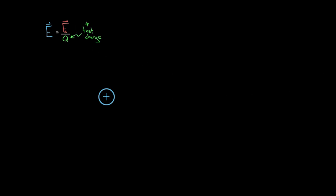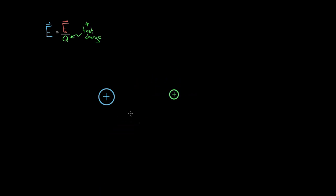If you take some positive test charge into some region and move it around, all you have to do to figure out the direction of the electric field — since this Q would be positive — is figure out what direction the electric force is on that positive test charge. The direction of the electric field E is going to be the same direction as the electric force on a positive test charge.